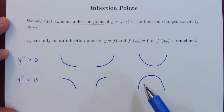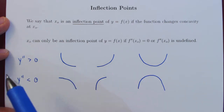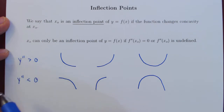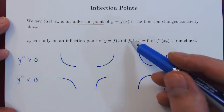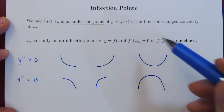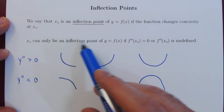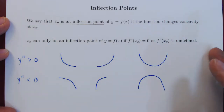Therefore, concavity can only change if we exclude those two possibilities. But if you exclude y double prime being positive and negative, all that remains are the values of x where the second derivative is 0 or is undefined. So hopefully this is now fairly obvious.